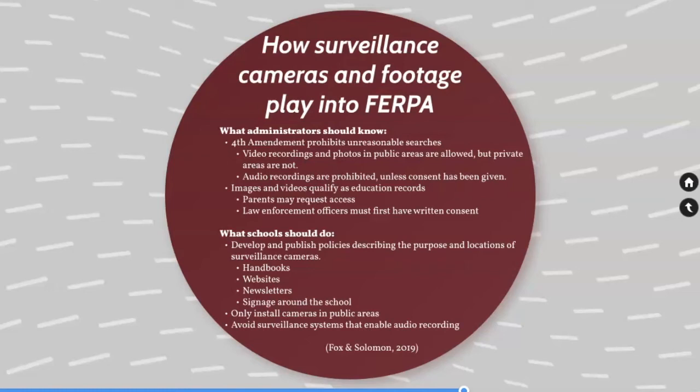Let's talk next about what schools should do. Schools should develop and publish policies describing the purpose and locations of surveillance cameras. This can be done through their handbooks, websites, newsletters, or even by putting up signage around the school. It's a good idea for schools to only install cameras in public areas, not in private areas, and they should avoid surveillance systems that enable audio recording.